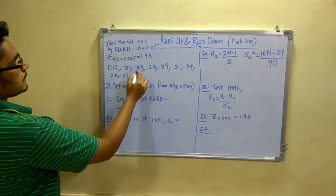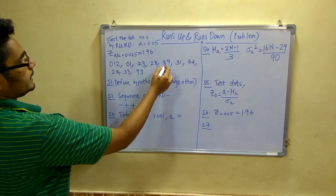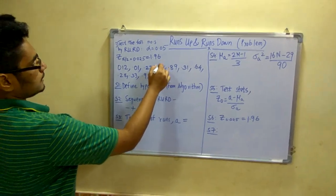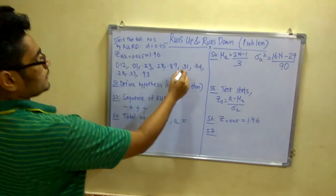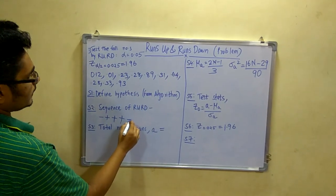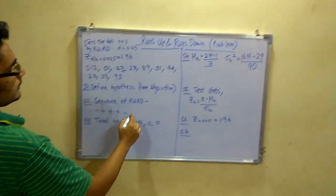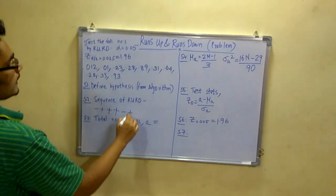Next, 0.28 minus 0.23 which is again positive, so write plus. Next is 0.89 minus 0.28, that is again a plus. Next, 0.31 minus 0.89 which is a negative value, so you will write a minus. Next, 0.64 minus 0.31 is a positive value, so you will write plus.